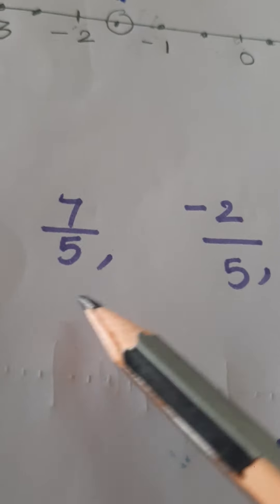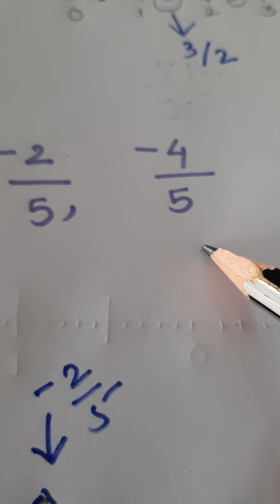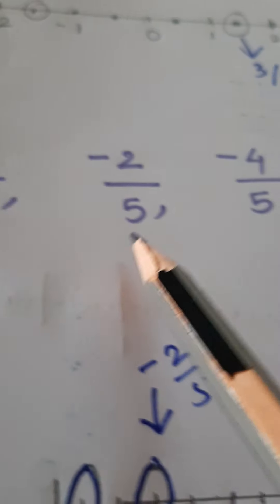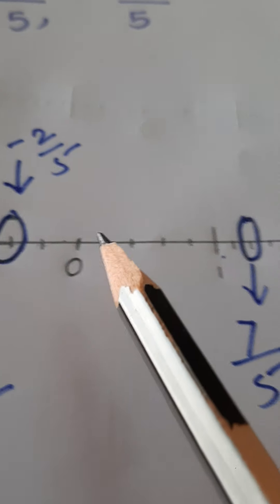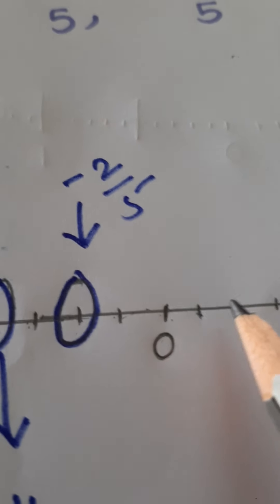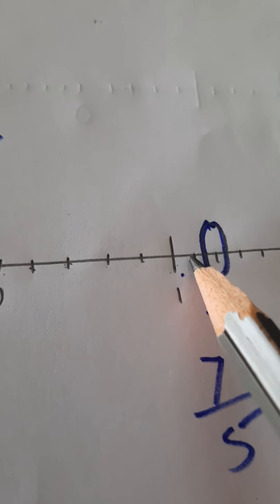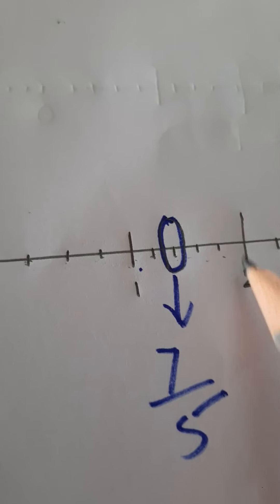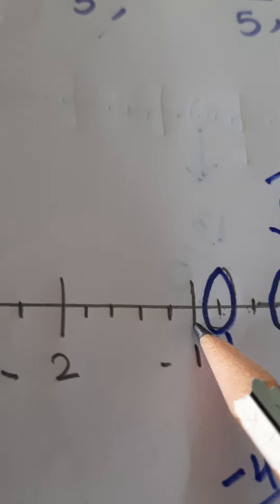Let's see the next example. Observe the given numbers: 7 upon 5, negative 2 upon 5, and negative 4 upon 5. Observe the denominator — everywhere the number is 5. It means you draw the number line and from 0 to 1, make 5 equal parts. At the fifth part, number 1 is there. Again from 1 to 2, 5 equal parts — at the fifth part, number 2. Similarly, the same procedure to the left side of 0 for negative numbers: from 0 to negative 1, 5 equal parts; negative 1 to negative 2, 5 equal parts.